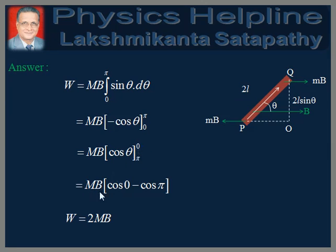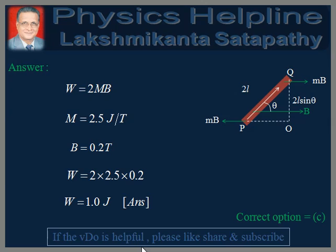This is equal to M·B into the upper limit cos 0 minus the lower limit cos pi. Now, cos 0 is equal to 1 and cos pi is equal to minus 1. Therefore, the quantity inside the bracket is equal to 2. Therefore, we get W is equal to 2·M·B. It is given in the question that M is equal to 2.5 joules per tesla and B is equal to 0.2 tesla. Therefore, putting these values in the equation, we get W is equal to 2 into 2.5 into 0.2.